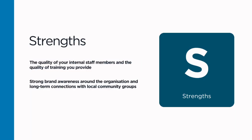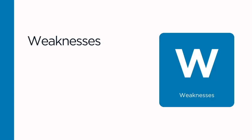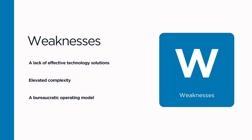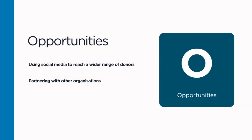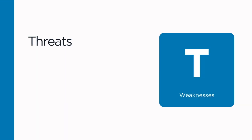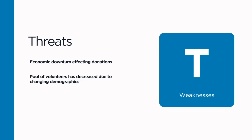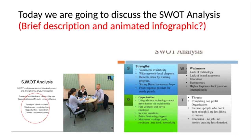When you are undertaking a SWOT risk assessment, think about it in this way. Strengths and Weaknesses are internal factors — factors from within your organisation. Opportunities and Threats are external factors — factors external or outside of your organisation.